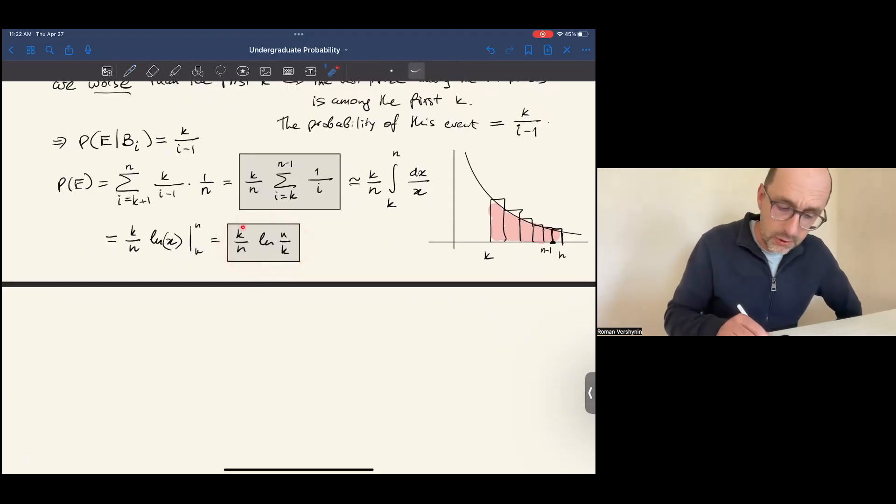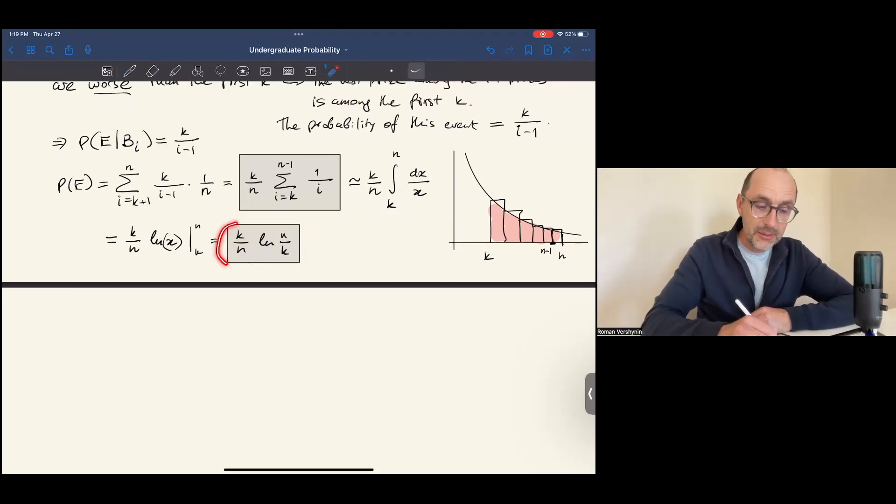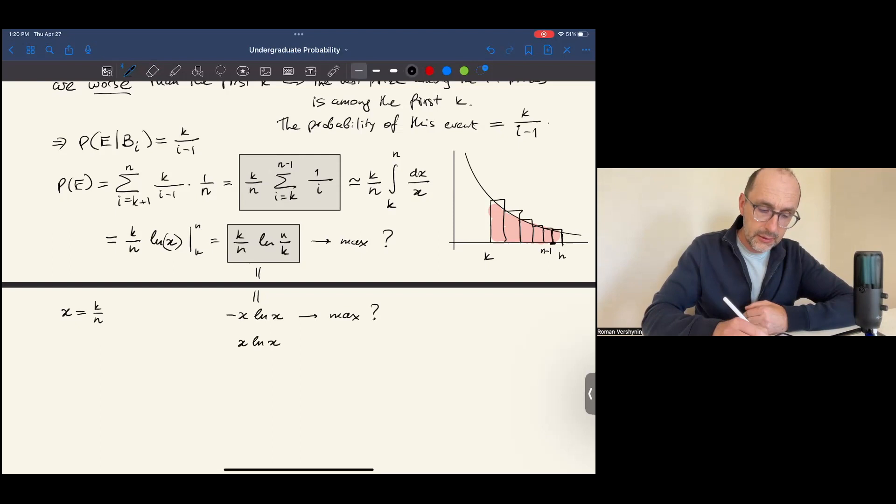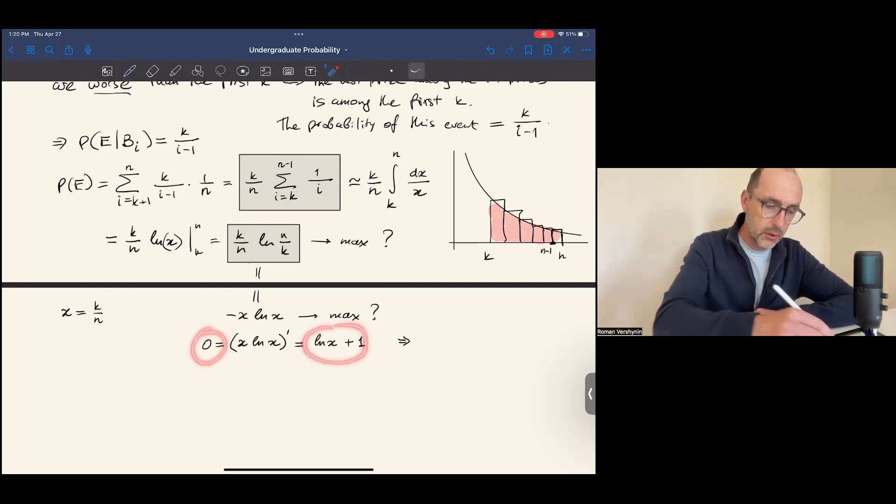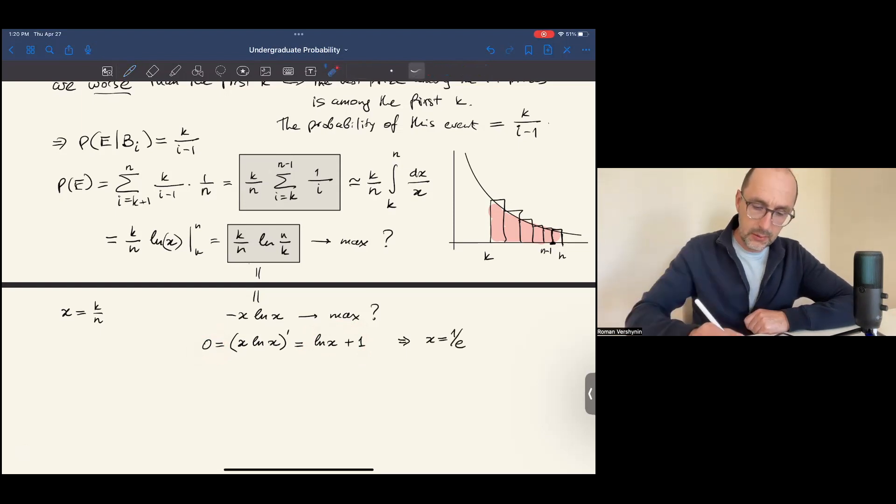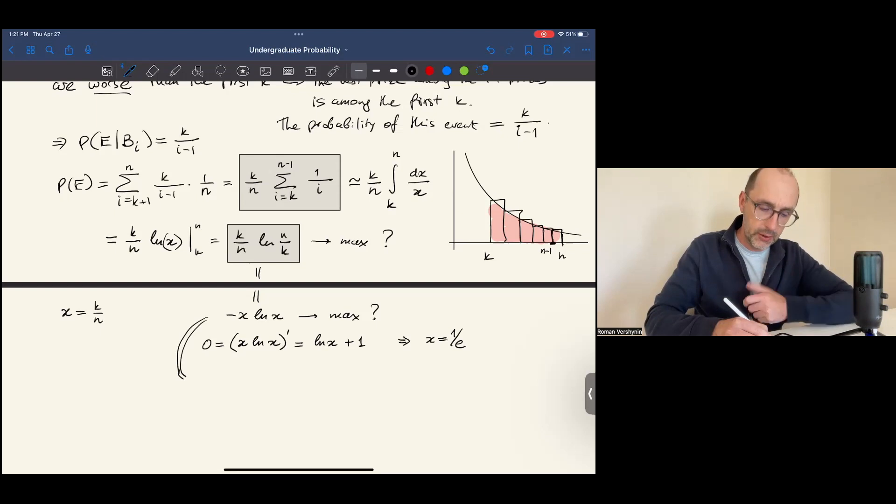This is the probability of getting the best price if we reject the first k. And now let's optimize this expression. Let's find the value of k that maximizes this, which is our chance to get the best price. To simplify our task, let's denote k over n by x. Then this expression becomes minus x natural log of x, and we would like to maximize it in x. To do that, as we were taught in calculus, we take the derivative and set it equal 0. Minus sign would not matter here. We take the derivative by the product rule, which is x prime times log x plus x times log x prime, which is 1 over x. So x cancels, we get 1. Then we solve this equation and obtain that x equals 1 over e. We substitute this value 1 over e into this expression, and it becomes minus 1 over e log of 1 over e, which is 1 over e.